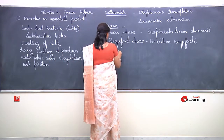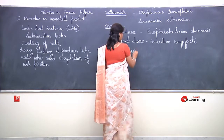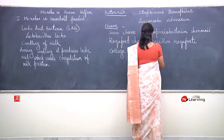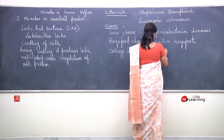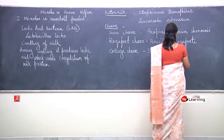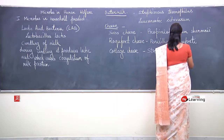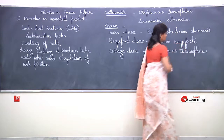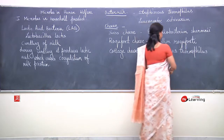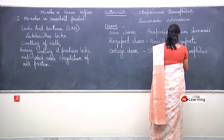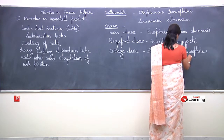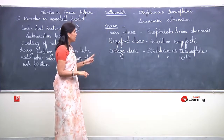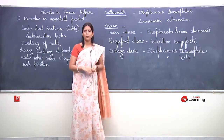Simple cottage cheese develop hota hai — cottage cheese produced by Streptococcus thermophilus and Streptococcus lactis. These two species, Streptococcus lactis and Streptococcus thermophilus, mainly Swiss cottage cheese ke liye responsible hain.